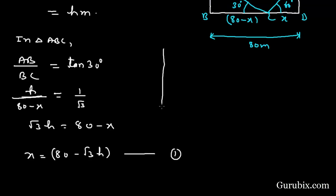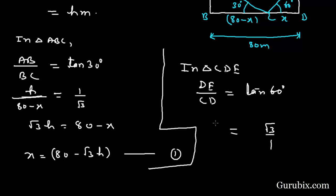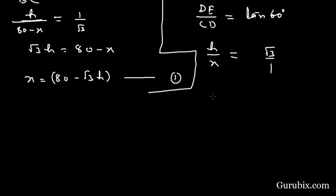Now we shall move to triangle CDE. In triangle CDE, we shall find the ratio of DE over CD. This equals tan 60 degrees. Tan 60 is square root of 3 over 1. DE is h meters, CD is x. Therefore, x equals h over square root of 3. This is our equation number 2.